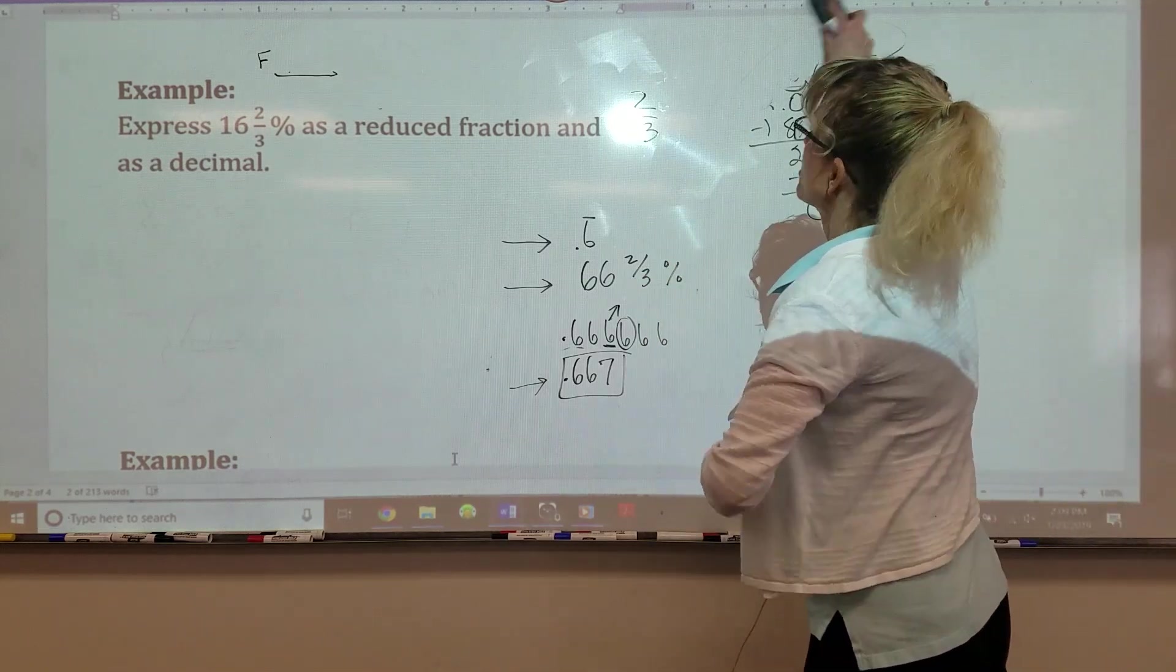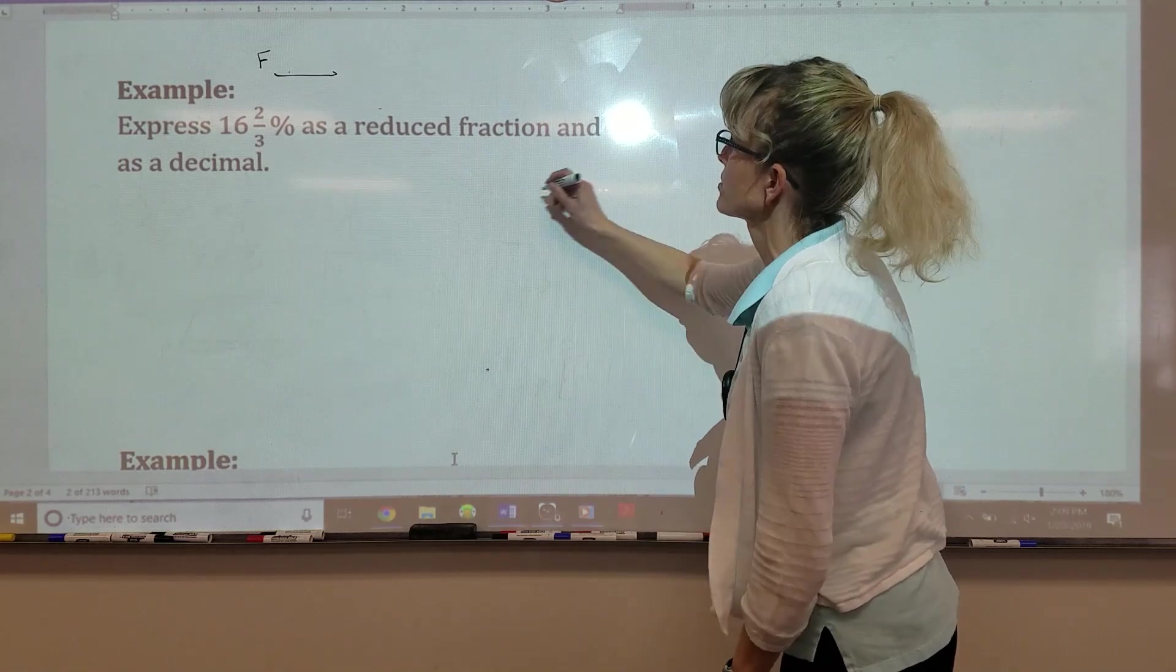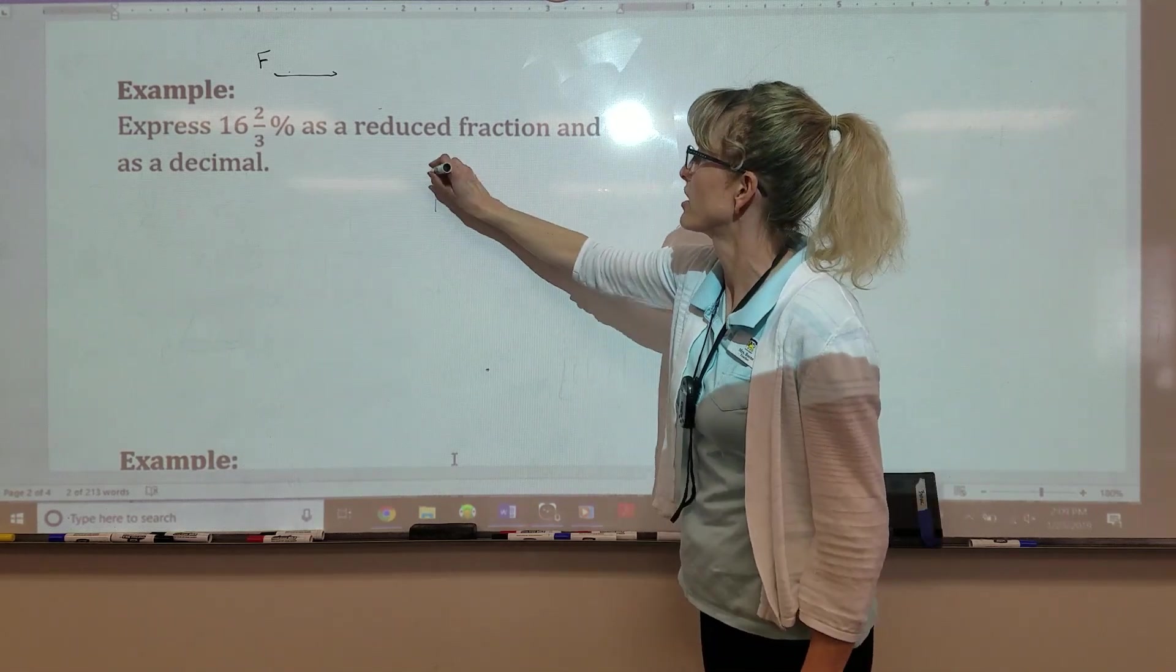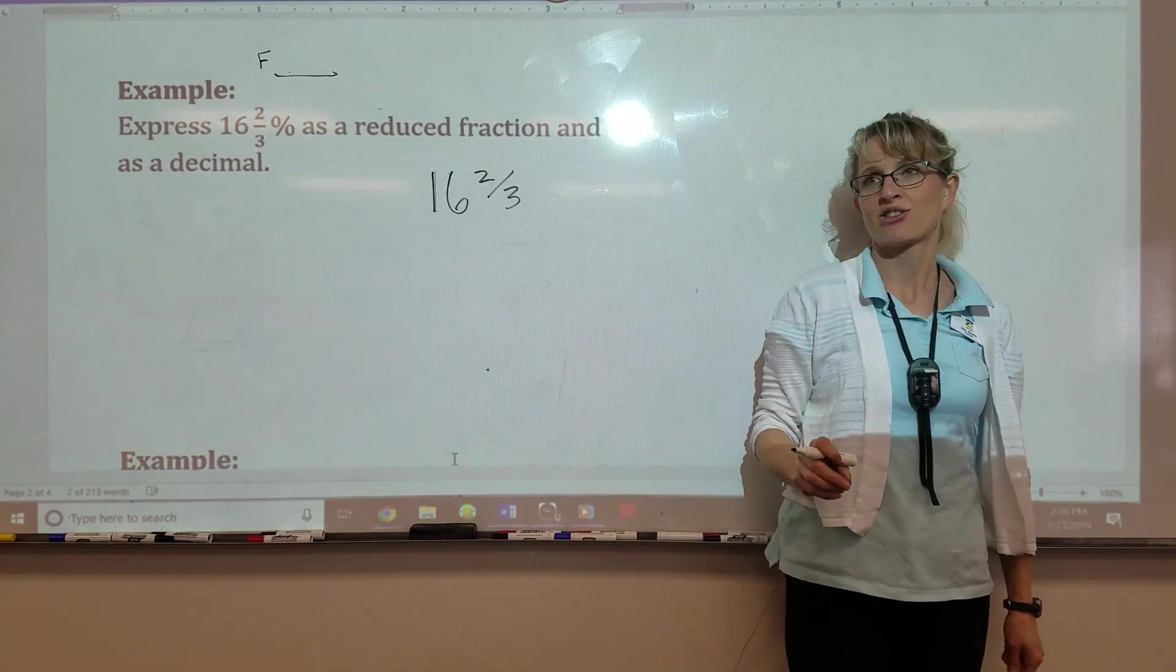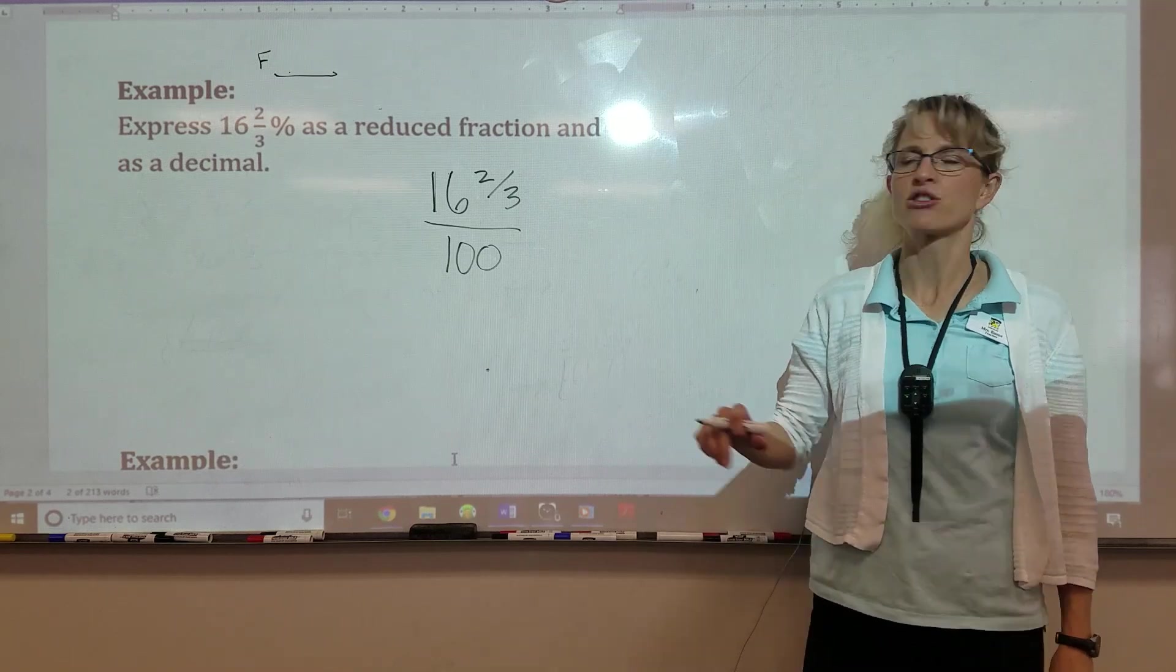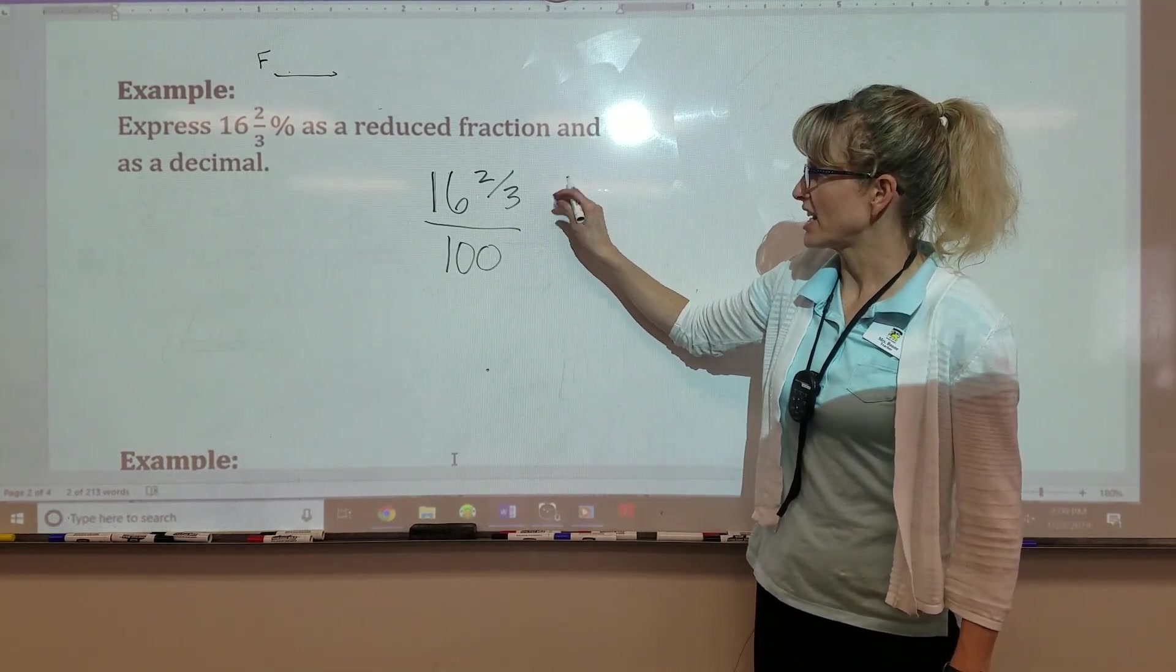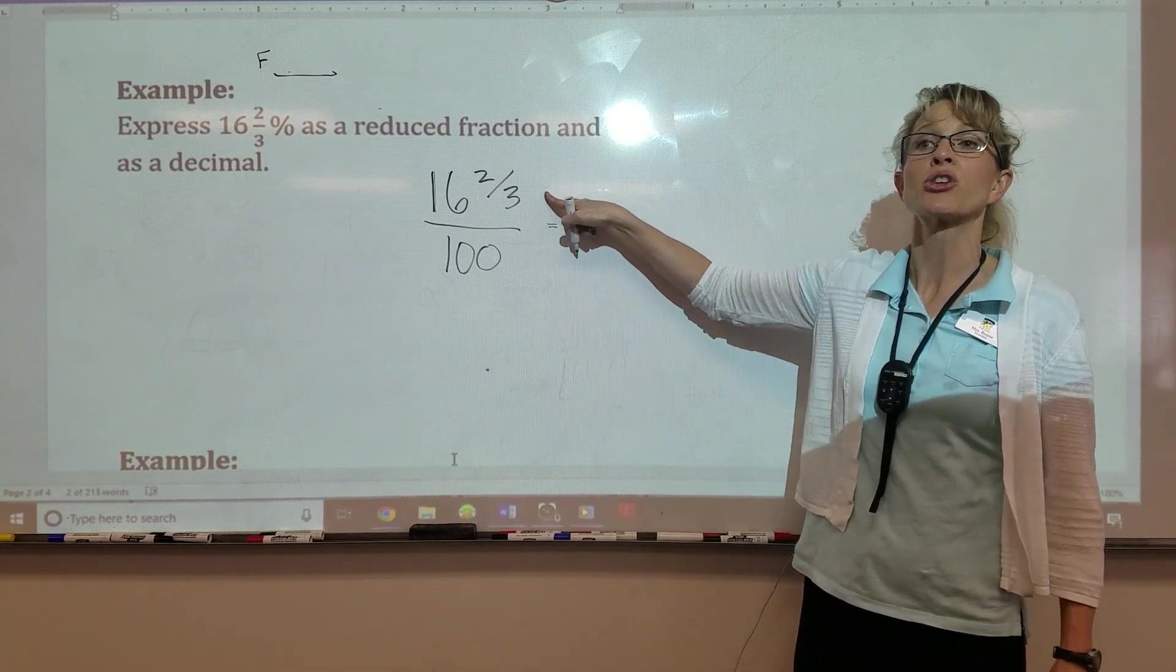All right. So let's take 16 and two-thirds percent, write it as a reduced fraction and decimal. So this one we're really going to have to put on our thinking caps. Percent means per 100. So I write it over 100. Percent means per 100, right? So I'm going to change that. Now I have no percent because I wrote it over 100.